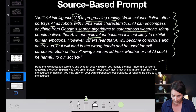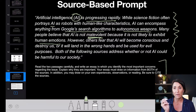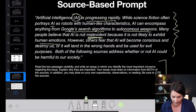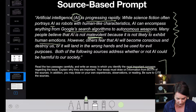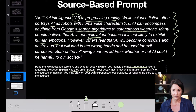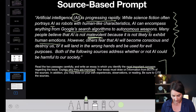Below that will be your directions — your task. Just like in the argumentative essay, you have a task at the bottom. Here it says: read the two passages carefully and write an essay in which you identify the most important concerns regarding this issue. Explain why they are important. Your essay must draw on information from both sources. In addition, you may draw on your own experiences, observations, or reading. Be sure to cite both sources.